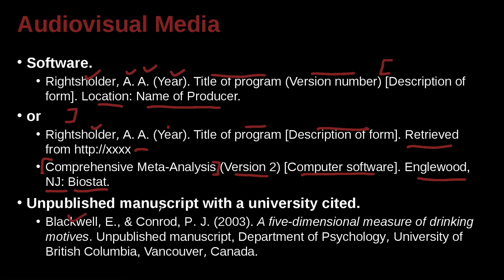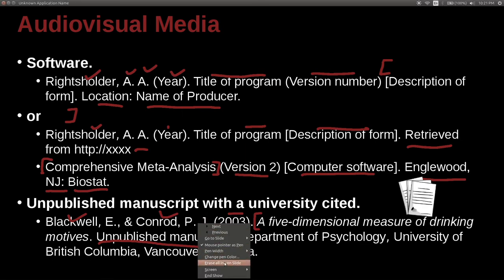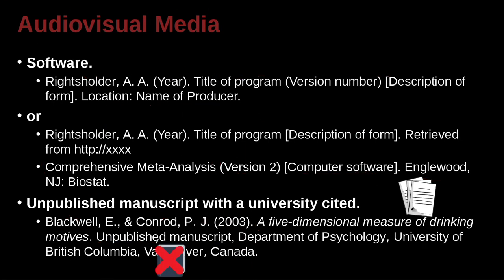Here are the author's names, and then we have the date. Here we have the name of the paper: 'A Five-Dimensional Measure of Drinking Motives.' And the key point — what's the journal? There is no journal. It's an unpublished manuscript, meaning it's not published. It is at the university, though — it's the Department of Psychology, University of British Columbia, and the location is Vancouver, Canada.